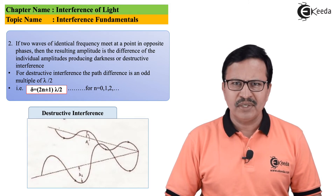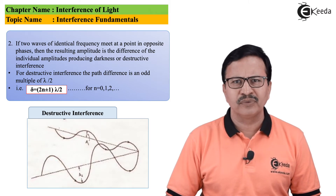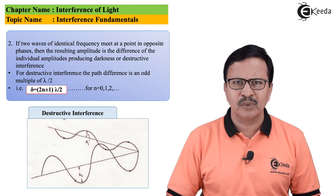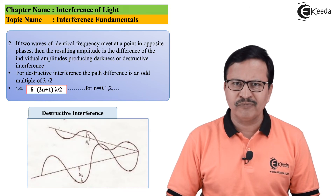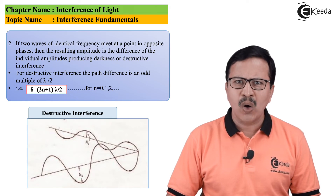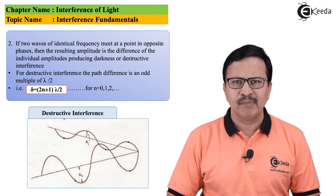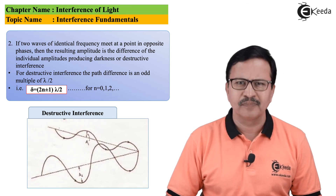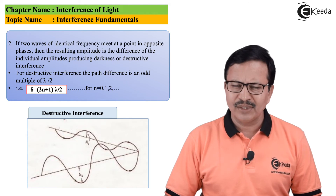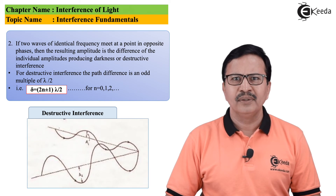In summary: whenever there is constructive interference, the path difference is an integral multiple of the wavelength, that is delta = nλ. And whenever there is destructive interference, the two waves are out of phase, and the path difference delta is an odd integral multiple of λ/2, represented by delta = (2n ± 1) × λ/2.